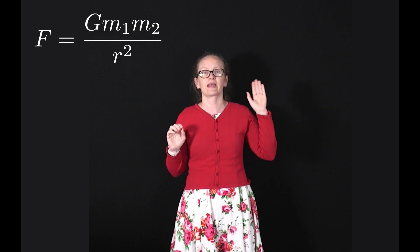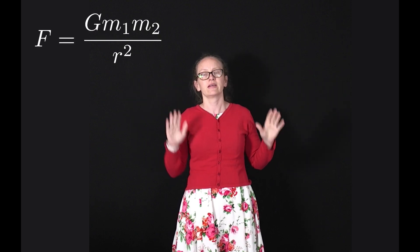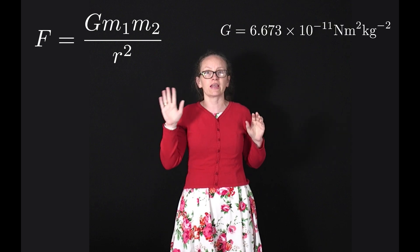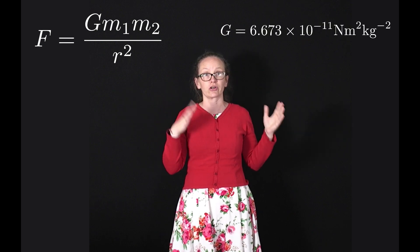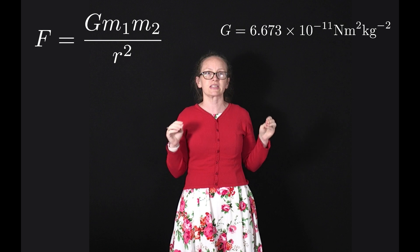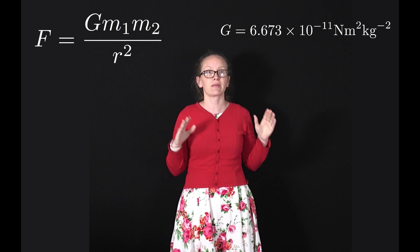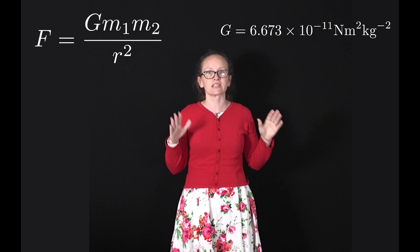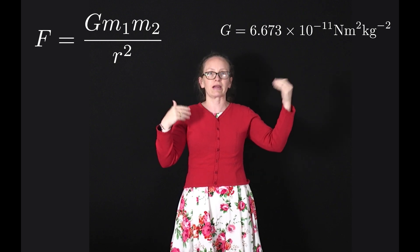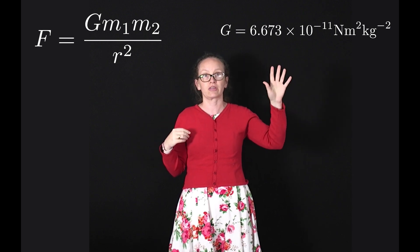Newton's law of universal gravitation can be written as F equals G m₁ m₂ over r squared. In this equation, G is the universal gravitational constant which equals 6.673 times 10 to the minus 11 Newton meters squared per kilogram squared.